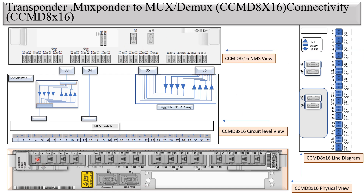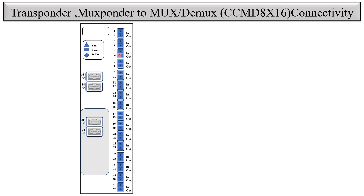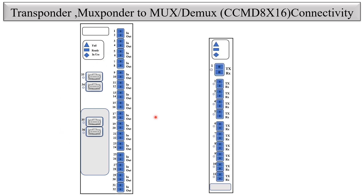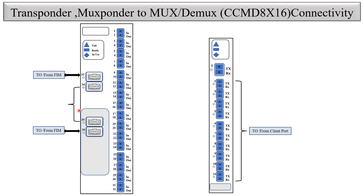Let's see how the physical connectivity works between the CCMD8x16 and the transponder/muxponder. Here is the CCMD8x16, and I have taken the example of a transponder. On the transponder, this is the line port and these are the client ports. You can see this is connected to the fiber module. The TX port of the line port of the muxponder is connected to the input port of a channel — for example, connected to input port 11.